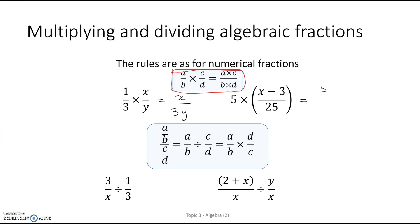Here, 5 times the top over 1 times the bottom. Right, we could rewrite the bottom as 5 times 5. Cancel, cancel, and I'm left with x minus 3 over 5.